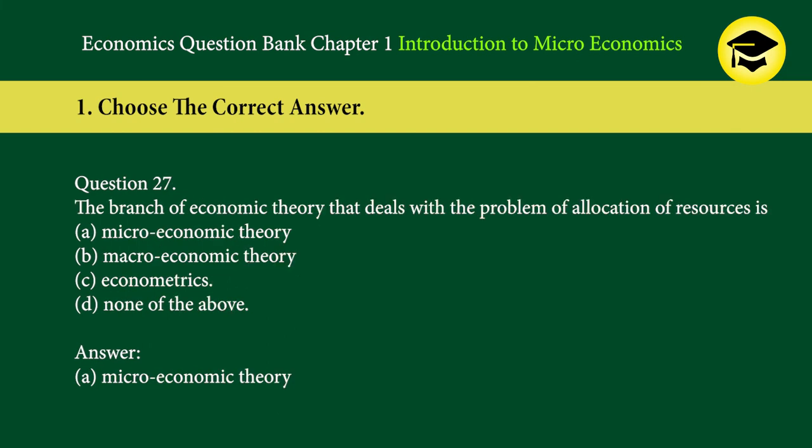Question 27: The branch of economic theory that deals with the problem of allocation of resources is — A. microeconomic theory, B. macroeconomic theory, C. econometrics, D. none of the above. Answer: A. Microeconomic theory.